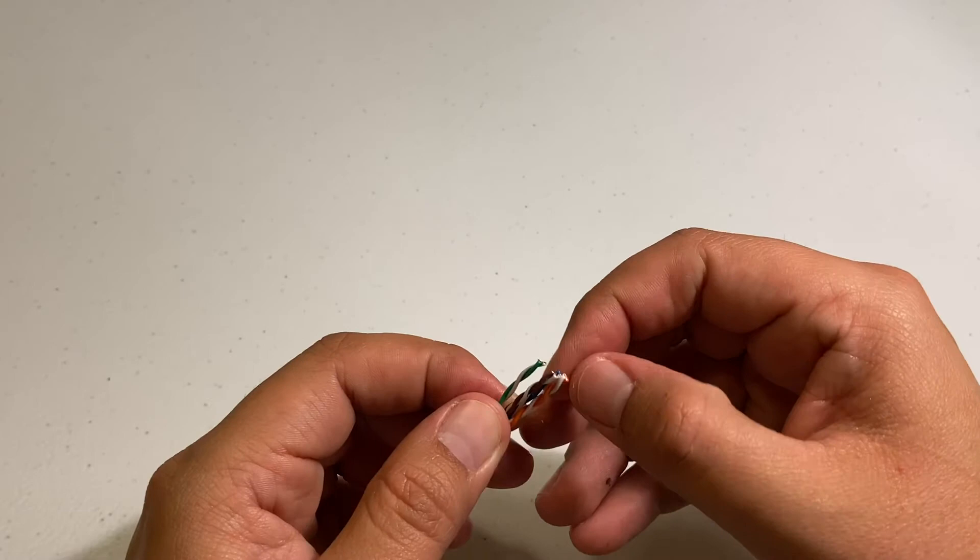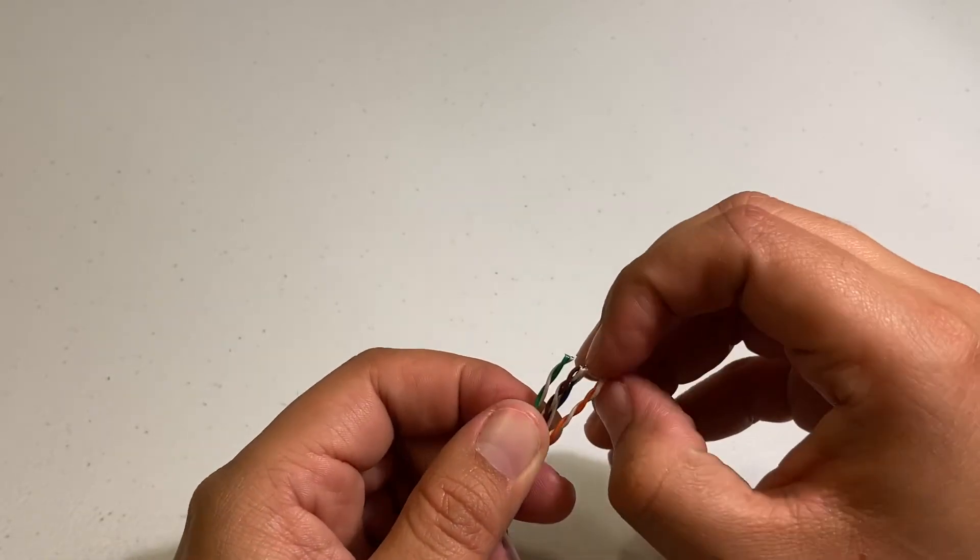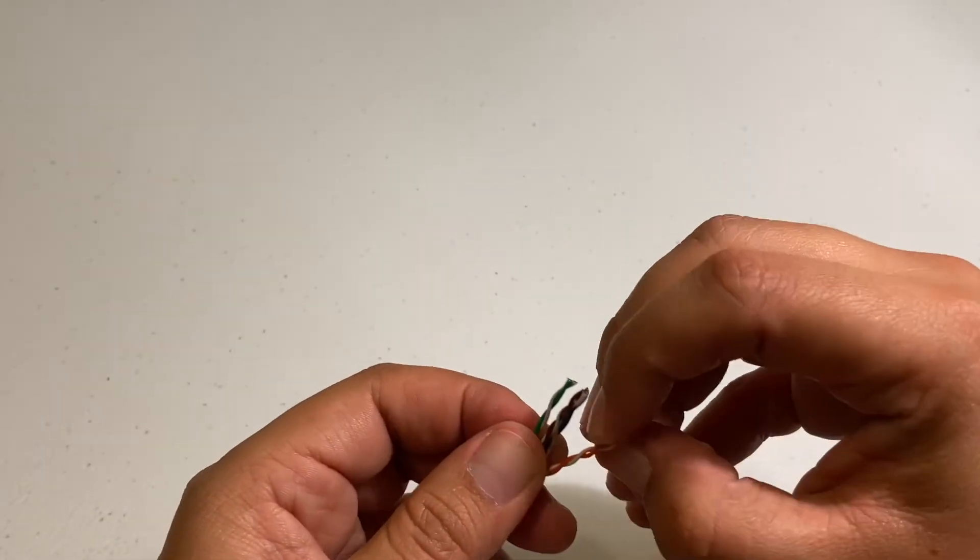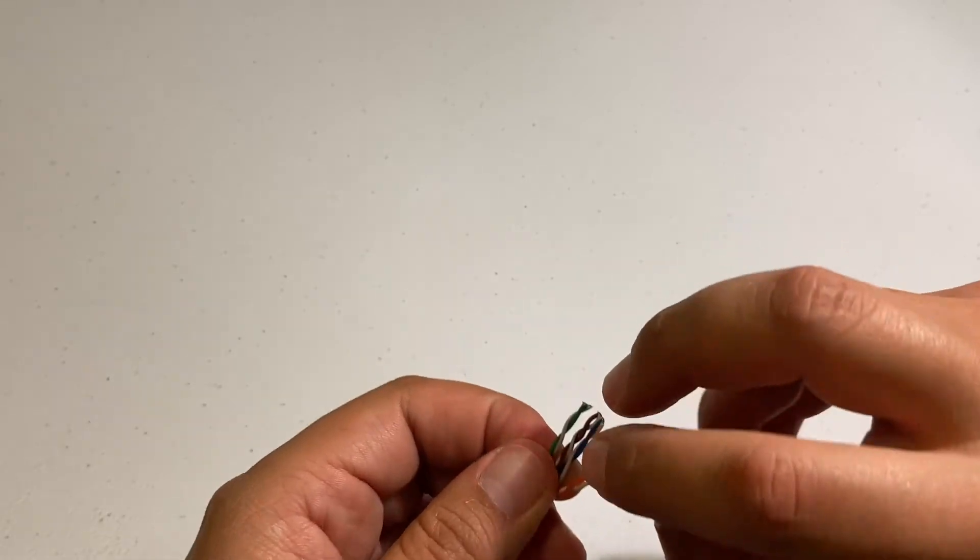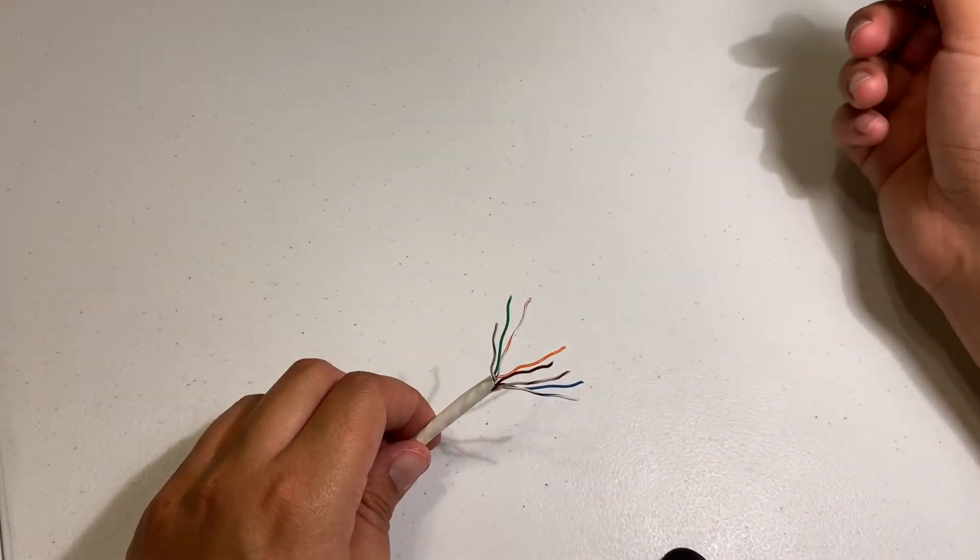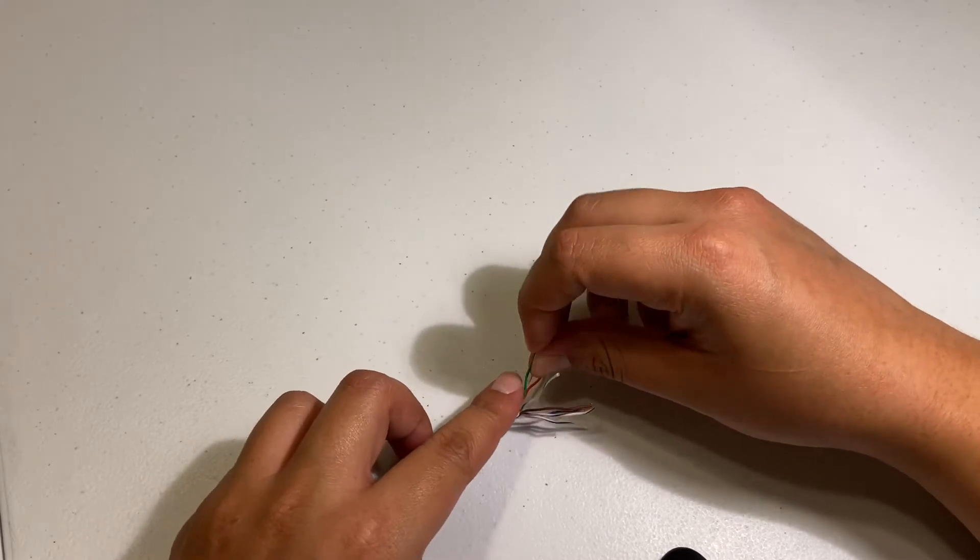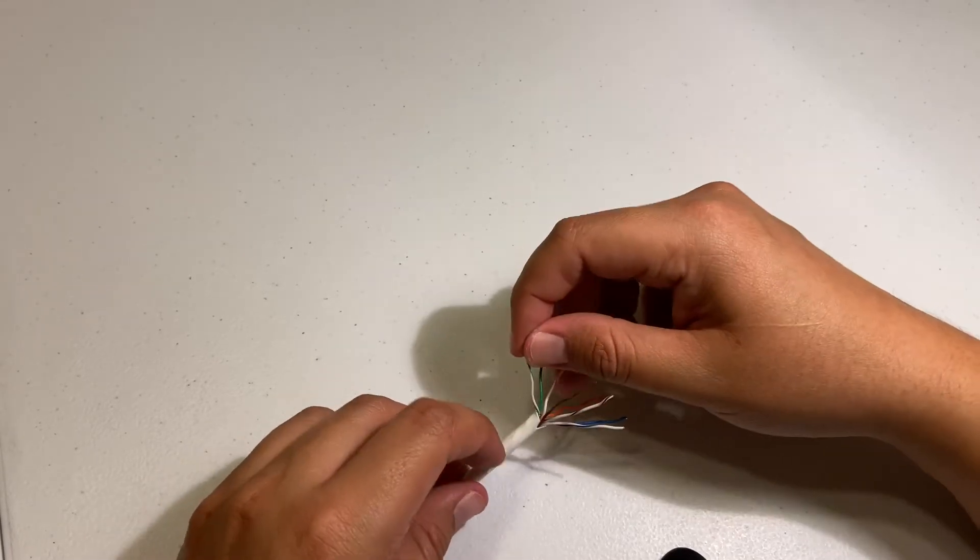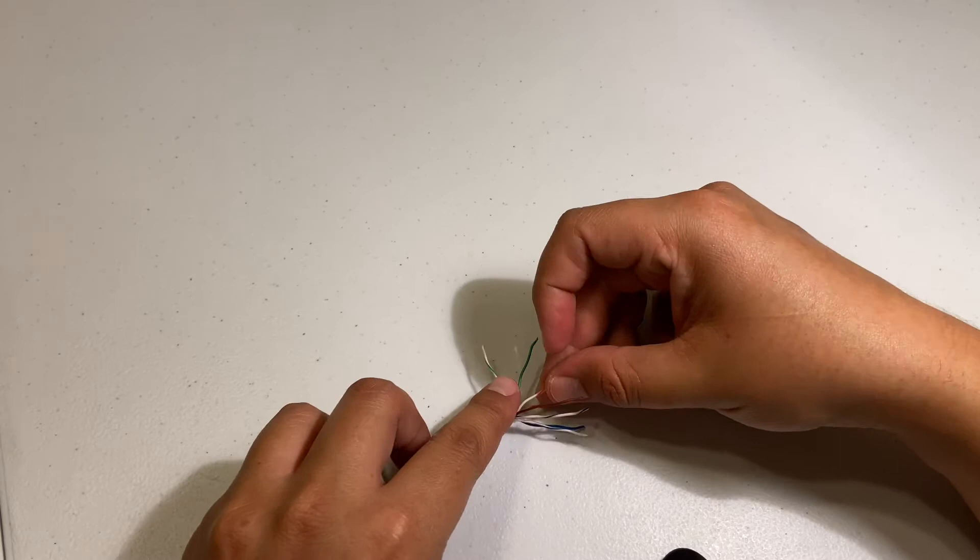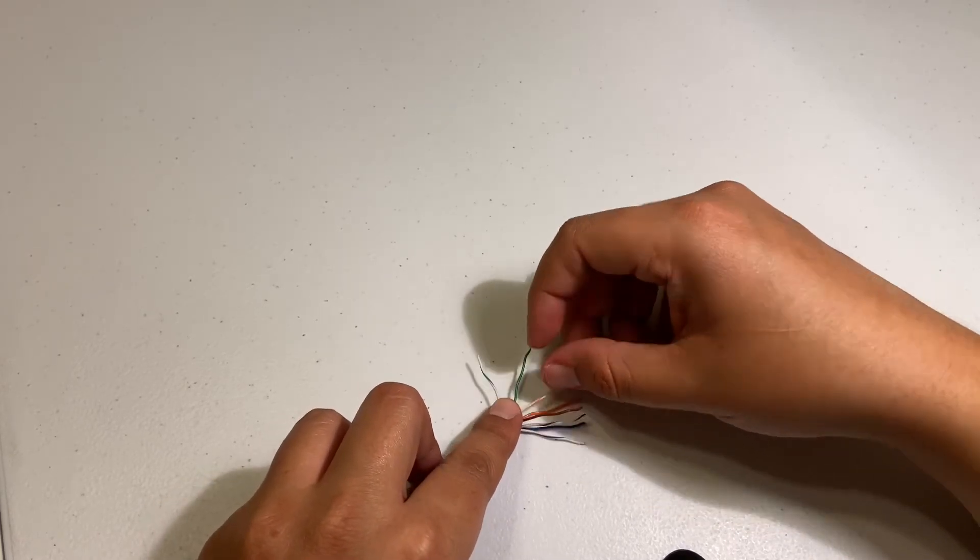So we're gonna start separating all these cables. So once you have them separated we're gonna have to put them together the way they are gonna go. So the first one is gonna be the light green and I'm gonna put a table right here so you can look at the colors.